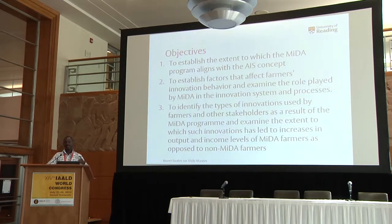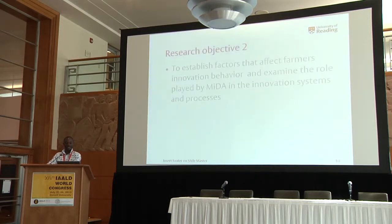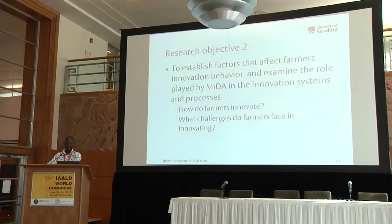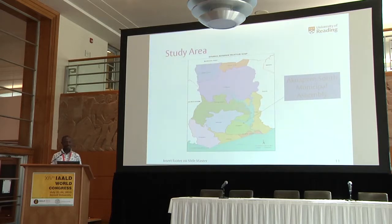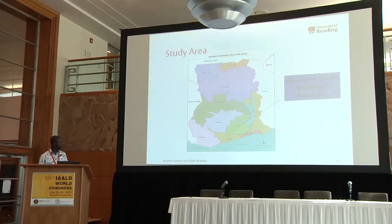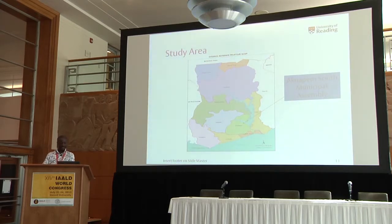This presentation zeroes in on the second research objective, which looks at the factors that affect farmers' innovation behavior and examines the role played by MIDA. The research questions posed are: how do farmers innovate, what challenges do farmers face in innovating, and to what extent do farmers use innovations? The study area is the Aquapim South Municipal Assembly, located in the eastern region of Ghana, 23 kilometers away from Accra, the capital city of Ghana. The study area is made up of the semi-deciduous forests and the coastal savanna ecological zone.